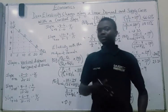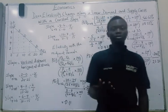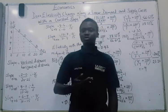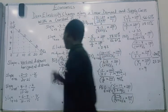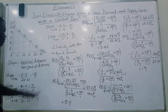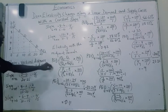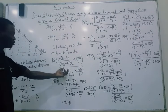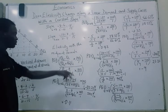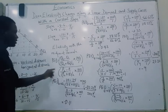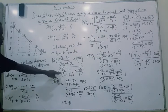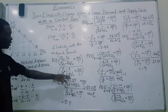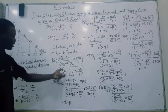Now that we have established that this particular demand curve has a constant slope, what about the elasticity? Is the elasticity of demand going to be constant along all of these different points? Let's check the elasticity with the midpoint formula. Price elasticity of demand equals (new quantity minus old quantity) divided by (new quantity plus old quantity divided by 2), times 100 over 1, all divided by (new price minus old price) divided by (new price plus old price divided by 2), times 100 over 1.